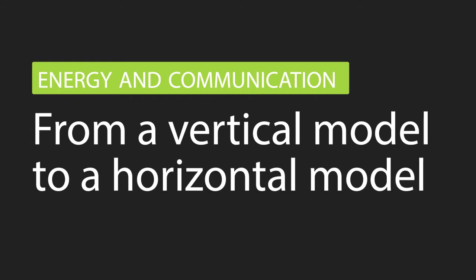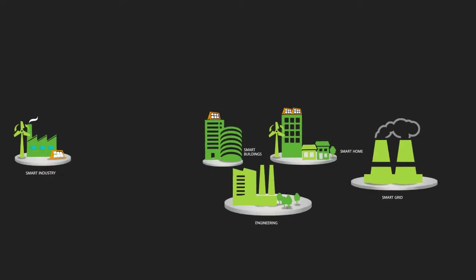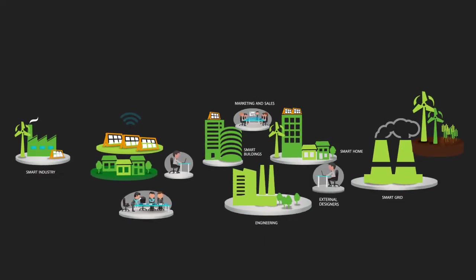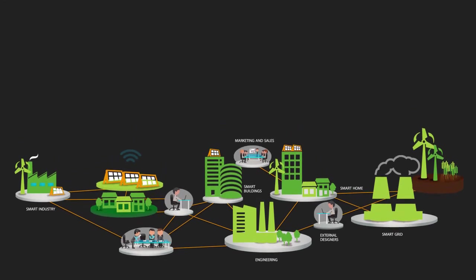Whether it's for energy or communication, the transition we are now seeing is characterized by a shift from the current centralized and vertical model, toward a horizontal production, distribution and consumption model. Which is where the Internet of Things comes in.